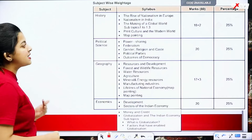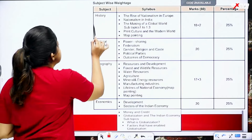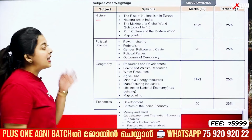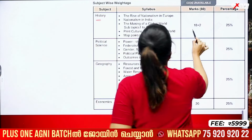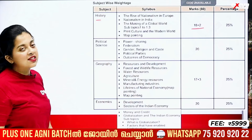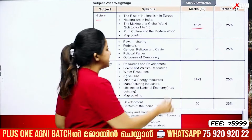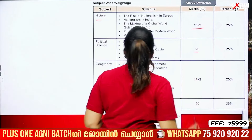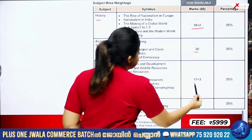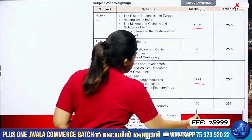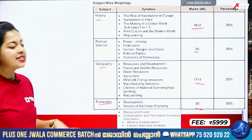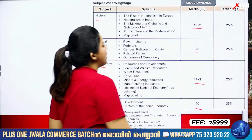That is the weightage of Social Science. History is 18 plus 2 marks. Political science is 20 marks. Geography is 17 plus 3 marks. Economics is 20 marks. The percentage is almost the same for all subjects.